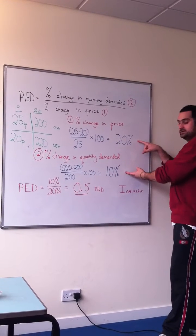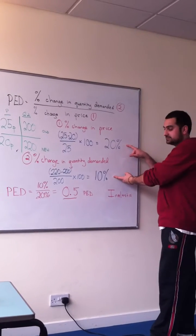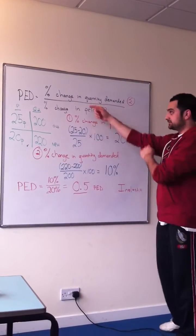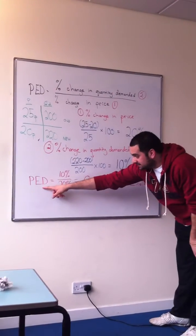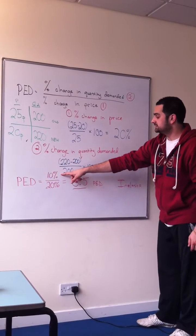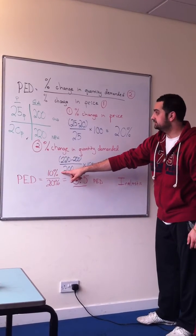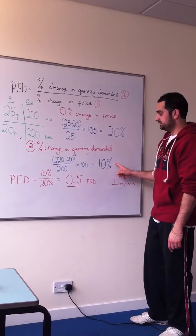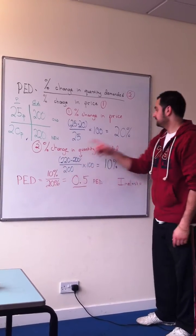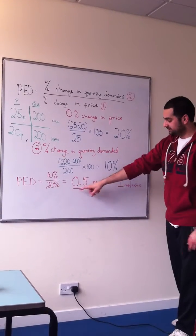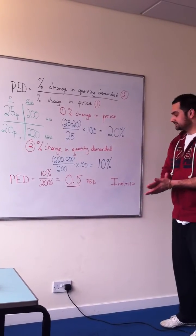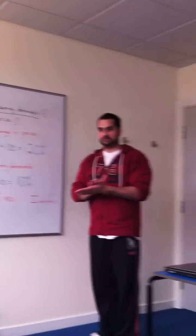Finally, we bring these two figures together — 20% and 10% — in our price elasticity formula. Price elasticity of demand equals the change in quantity demanded (10%) divided by the change in price (20%), giving us the answer of 0.5, which is an inelastic price elasticity of demand.